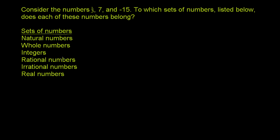Then rational numbers, these are any number that can be represented by a fraction. Irrational numbers cannot be represented by a fraction. And then real numbers are essentially all of these.